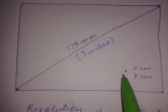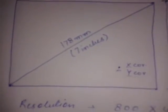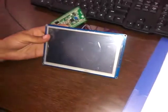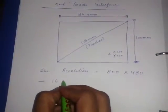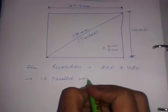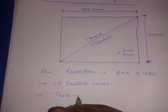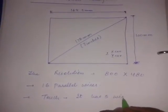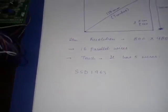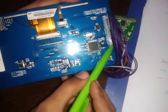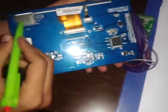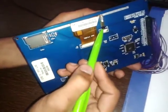If you want to illuminate a point, you have to know the x-coordinate plus y-coordinate of that point. This LCD has 16 parallel wires. For touch interface, it has 5 wires. This is the controller for this LCD — it uses the controller named SSD1963. It has a 40-pin connection. This is the SD card interface, and this is the touch interface. These wires are for the touch interface.